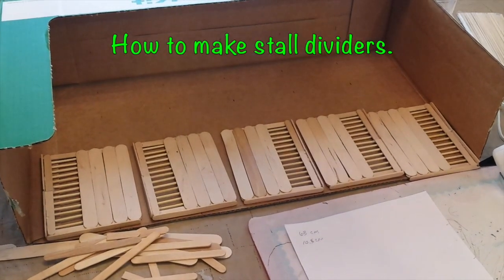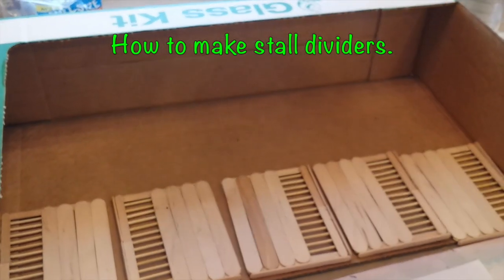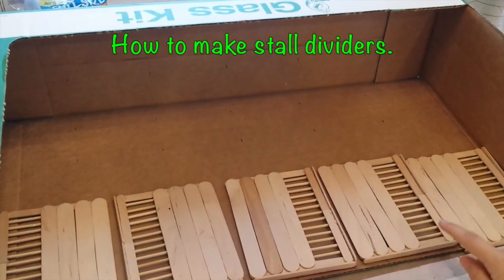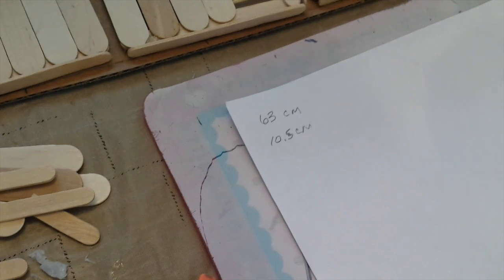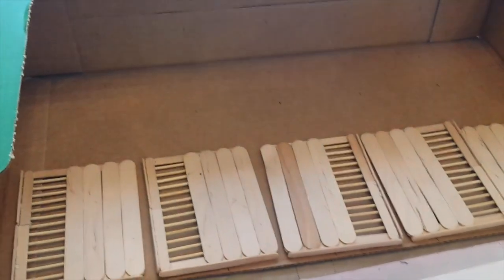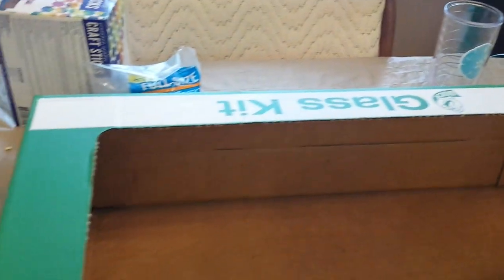So this is the box that we chose to do Ella's barn with and we did 5 stall dividers and the box is 63 centimeters and every 10.5 centimeters we're going to put a stall divider in and it took us an hour and 15 minutes to make these 5.